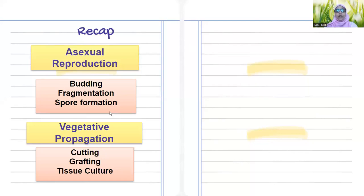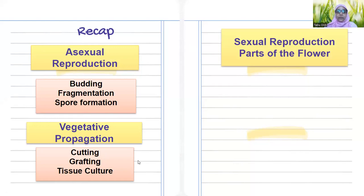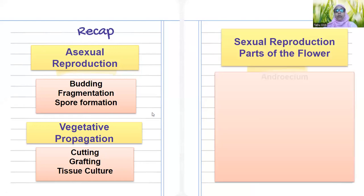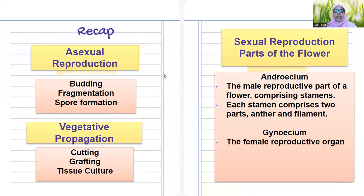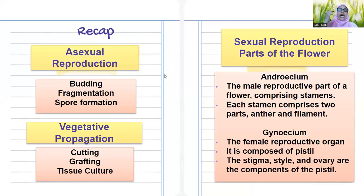Just a quick recap of what we have covered so far: in asexual reproduction we covered different types, which also includes vegetative propagation like cutting, grafting, tissue culture, etc. Then we discussed sexual reproduction — the androecium in detail, that is the stamen which has the anther and the filament. The gynoecium is the female reproductive part, also known as the pistil, which has three parts: stigma, style, and ovule. We will discuss the gynoecium in detail in the next video.